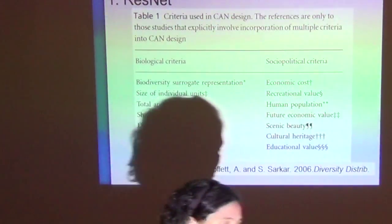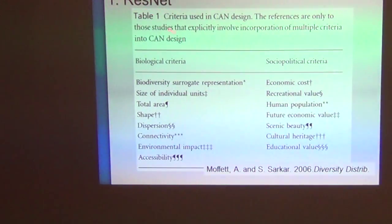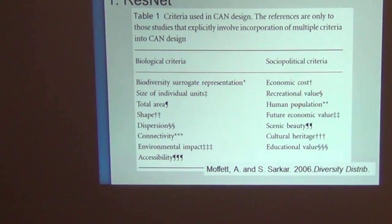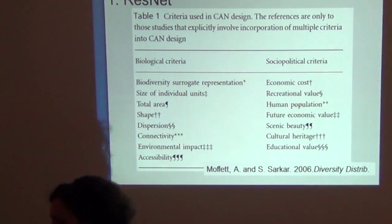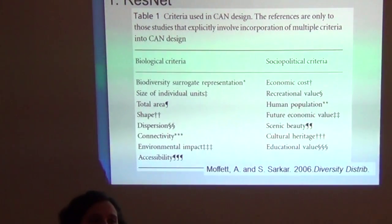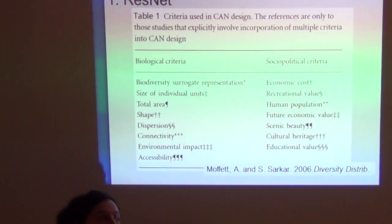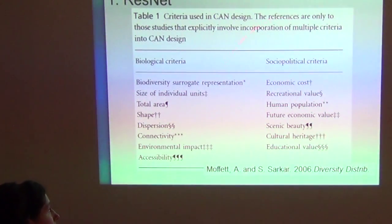What was CAN? Conservation Area Network — criteria used in conservation area network design. We use conservation area network, we use reserve network, we use protected area network — we use several words to basically say the same thing.